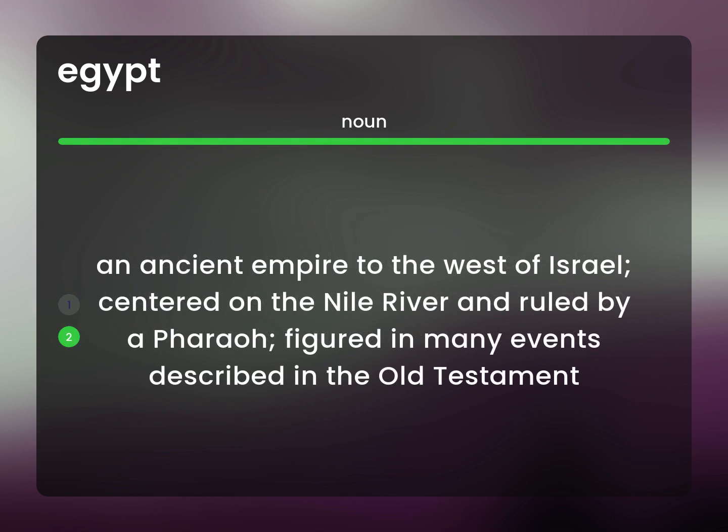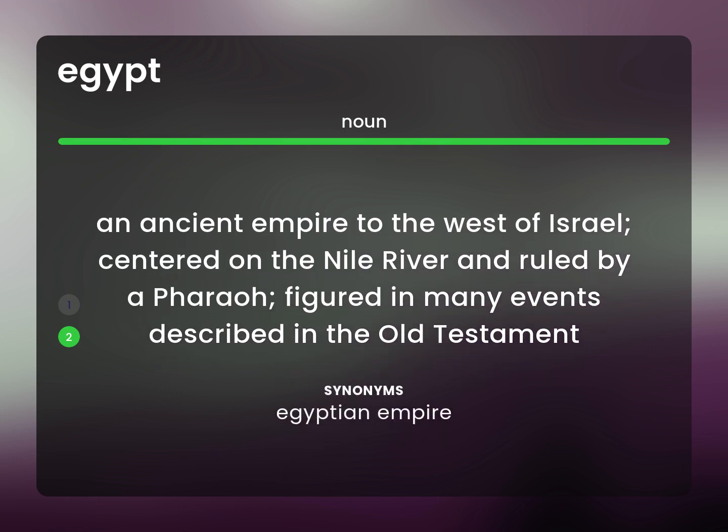An ancient empire to the west of Israel, centered on the Nile River and ruled by a pharaoh, figured in many events described in the Old Testament. Egyptian Empire.